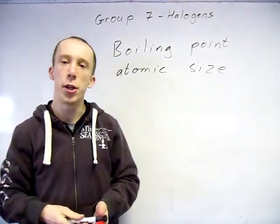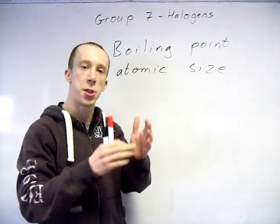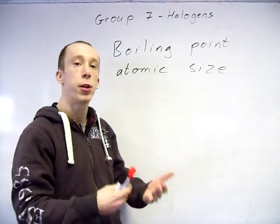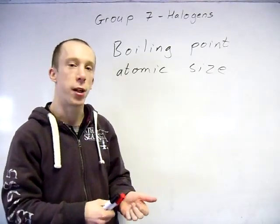So boiling point atomic size, so atomic size fairly straightforward as you go down the group then you've got an increased amount of electron shells so the size gets bigger, fairly straightforward.